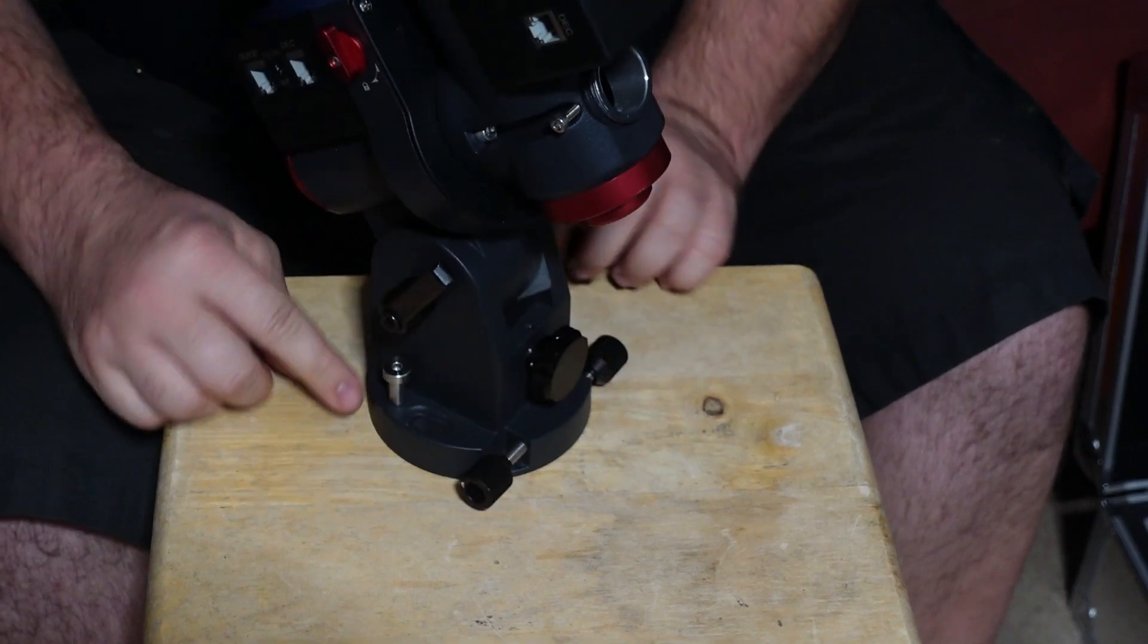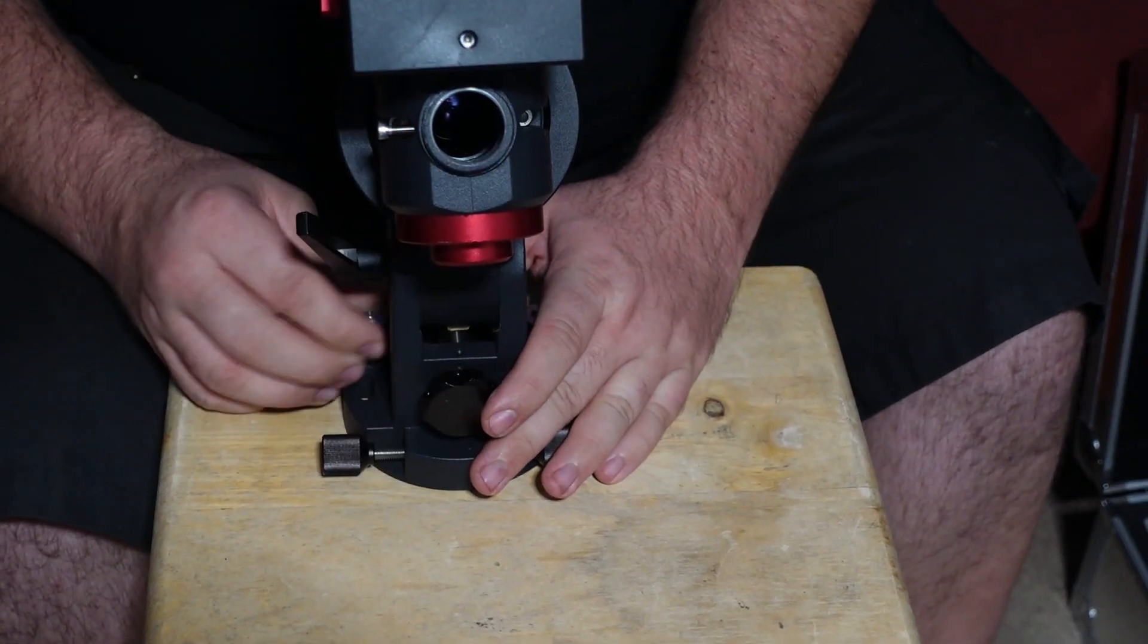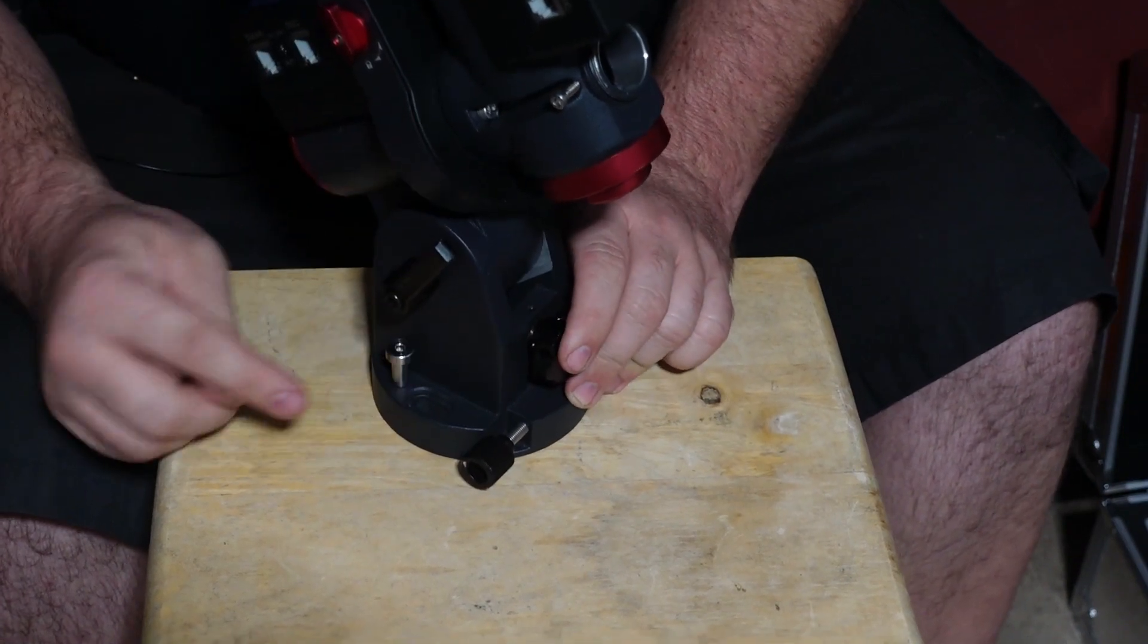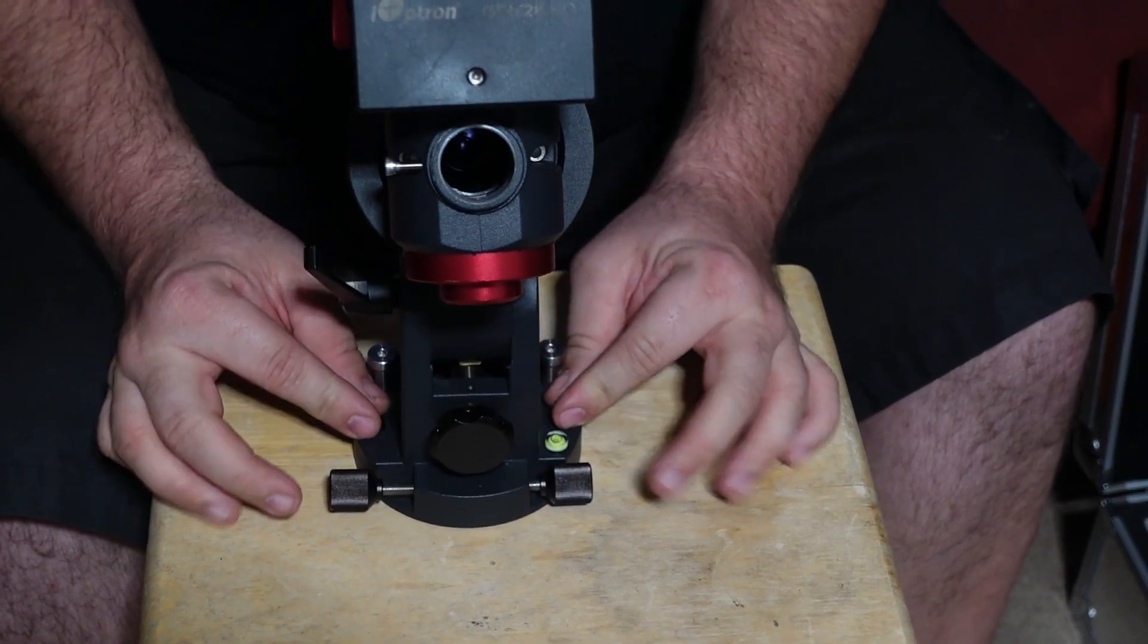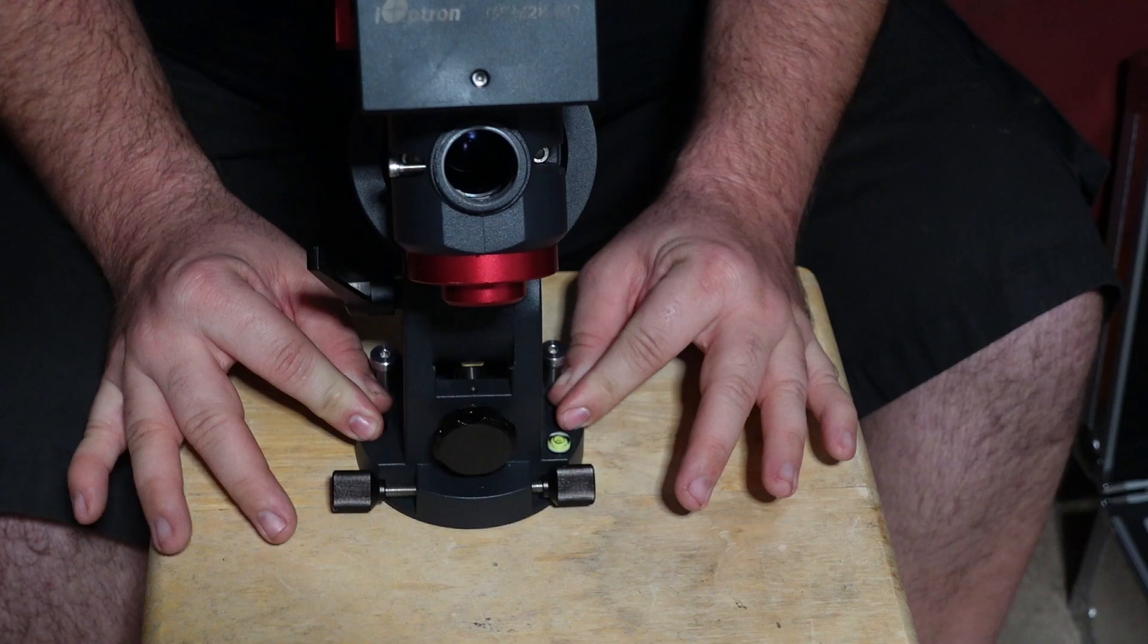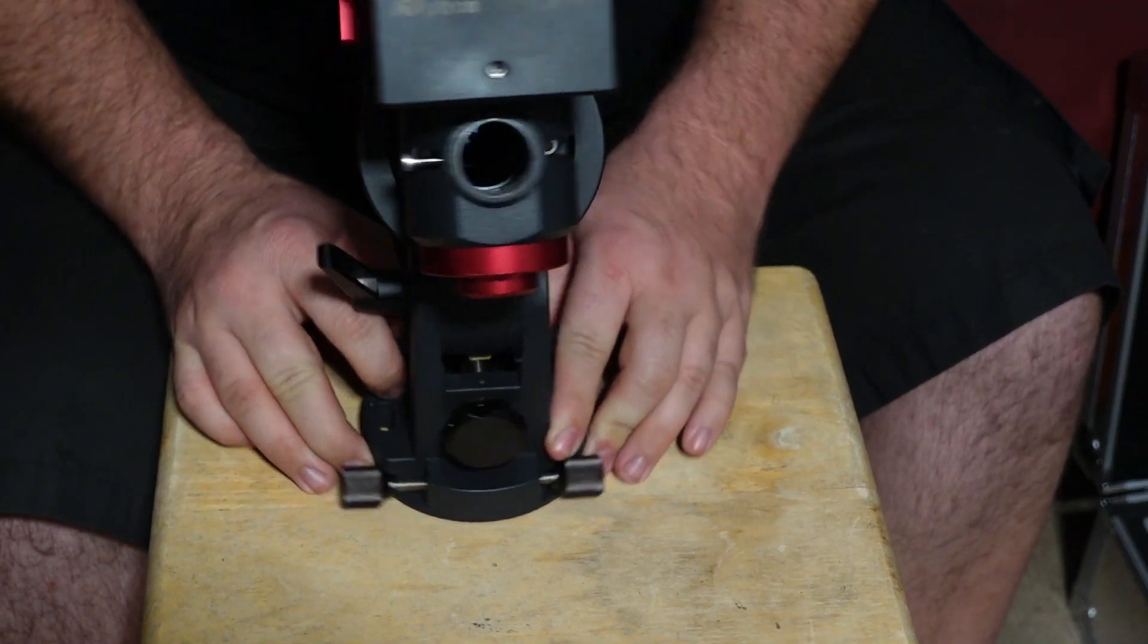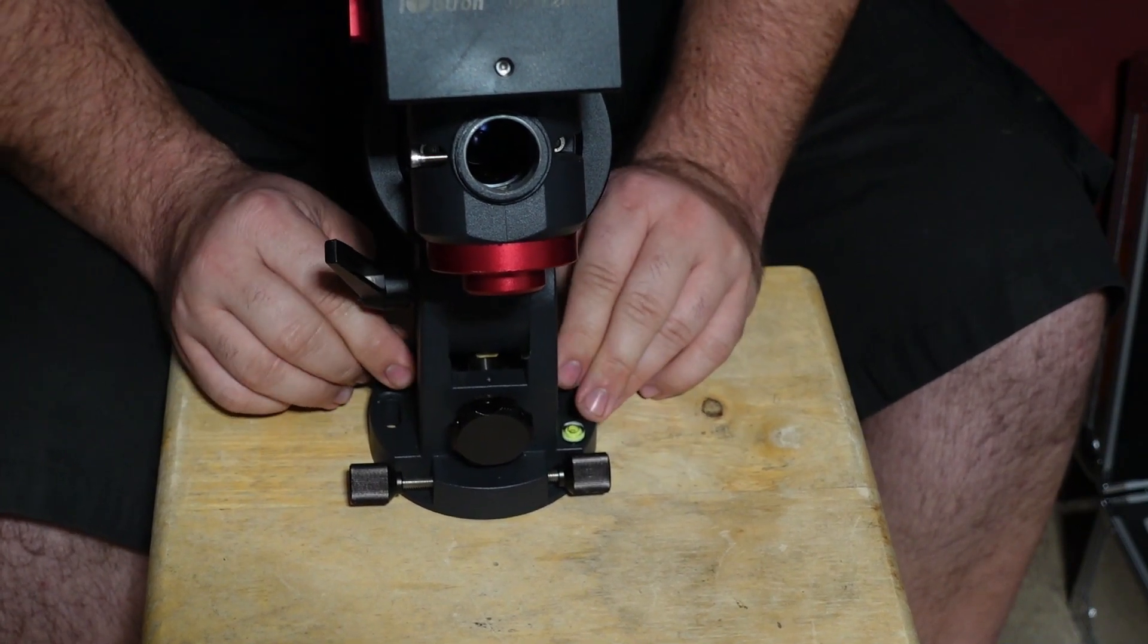Instead they opted to go for these two bolts on the side right here. Basically where they're at right now is just a placeholder so you don't lose them. But if you unscrew them, which I don't really want to unscrew them because it takes forever, they go into these slots right here and it allows you to clamp down on two sides onto the tripod, but also allows you a little bit of motion so you can move your telescope back and forth to get polar aligned.